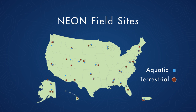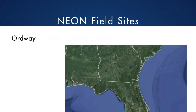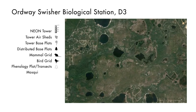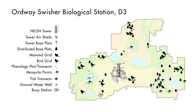What we have resulted in is a generalized site design. This is what it looks like on an actual NEON site — Ordway Swisher Biological Station down in Domain 3 in Florida — and while this is the specific design for Ordway Swisher, it is actually representative of what we will be implementing at most other sites throughout the U.S.